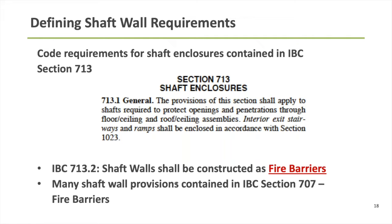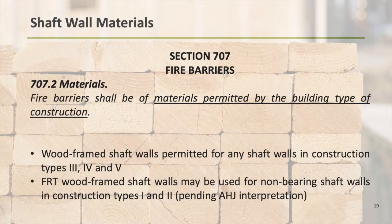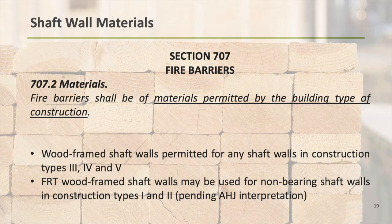The first thing we want to understand is: can I frame a shaft wall with wood, and under what circumstances? Turning to Section 707 — the fire barrier section — it says fire barriers are framed of any materials permitted by the building's type of construction. If you're familiar with the five different construction types in IBC — Types 1, 2, 3, 4, and 5 — through the 2018 version, Types 1, 2, 3, and 5 had subcategories A and B.